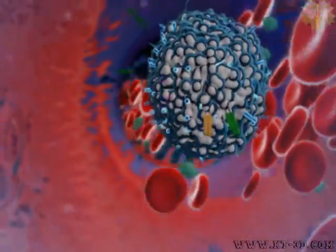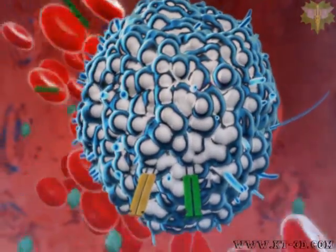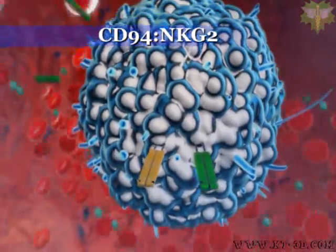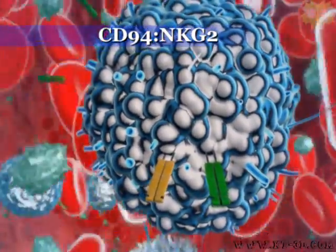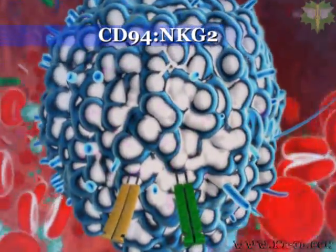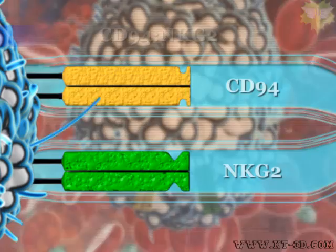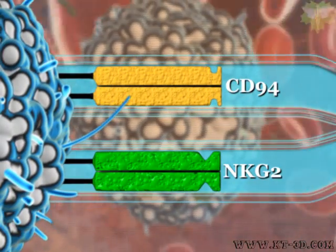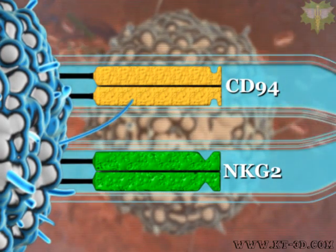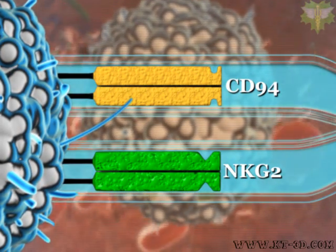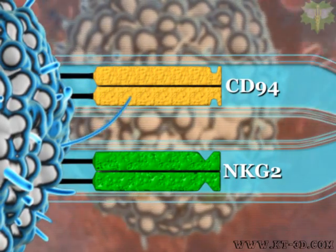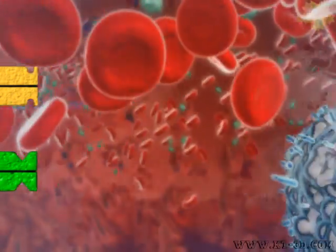One complication in understanding natural killer cell activity is that the same structural families — that is, the CD94-NKG2 natural killer receptors — contain both activating and inhibitory receptors. The NKG2 proteins differ for the inhibitory NKG2A and NKG2B, and the activating NKG2C and NKG2D protein structures of the CD94-NKG2 complex.